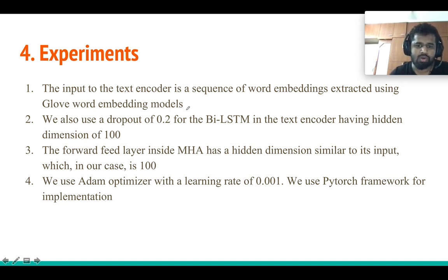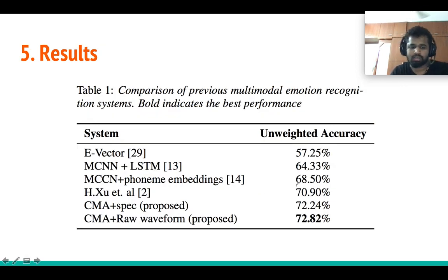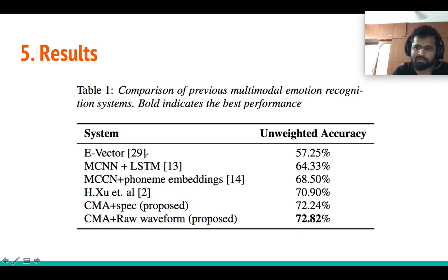We use GloVe word embeddings as input to the text encoder with a BiLSTM. The multi-head self-attention layer includes a feed-forward network with hidden size 100. We use the Adam optimizer with a learning rate of 0.01, and all models are implemented in PyTorch.